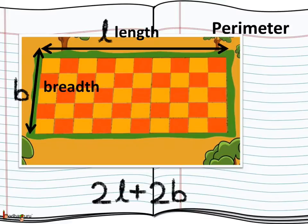We know the formula for the perimeter of a rectangle, which is 2 multiplied by length plus 2 multiplied by breadth. The values of length and breadth vary with the size of the rectangle, so these are variables. If we express them using variables l and b respectively, the perimeter becomes 2l plus 2b. So an algebraic expression can have more than one variable.